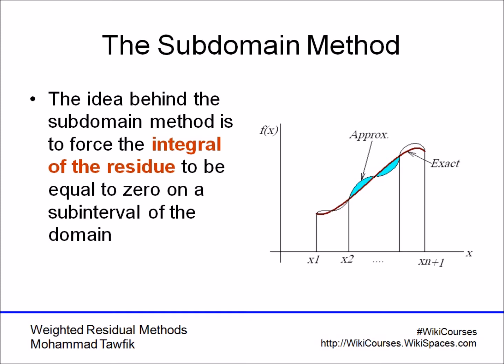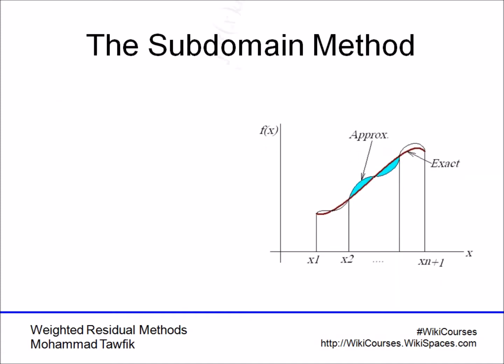So they add up to zero. Now the more subdomains in which the residue is equal to zero, the more accurate your result will become. And this is basically the main target of all weighted residual methods.